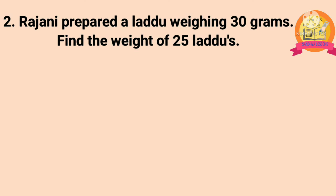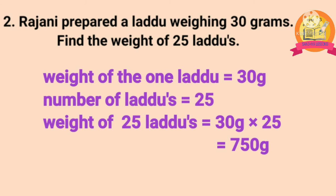Second problem: Rajini prepared a laddu weighing 30 grams. Find the weight of 25 laddus. Solution: weight of one laddu is 30 grams. Number of laddus is 25. Weight of 25 laddus is obtained by multiplying 30 grams with 25. After multiplication, we get 750 grams. Therefore, weight of 25 laddus is equal to 750 grams.